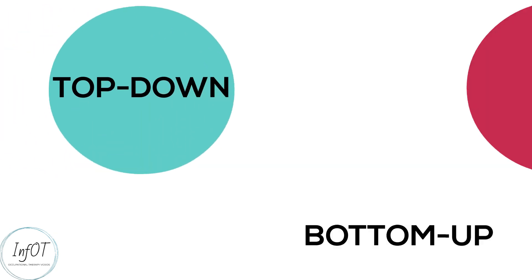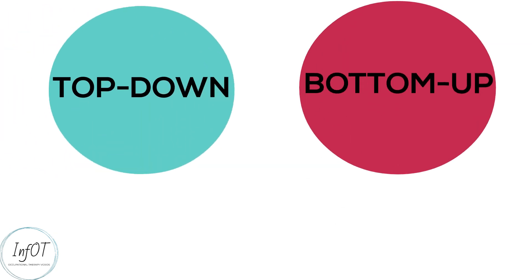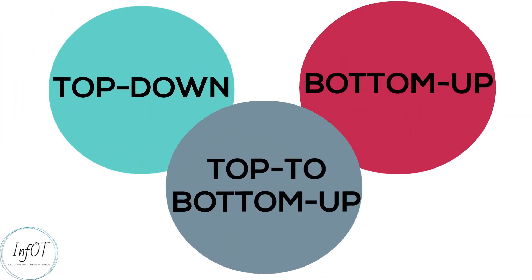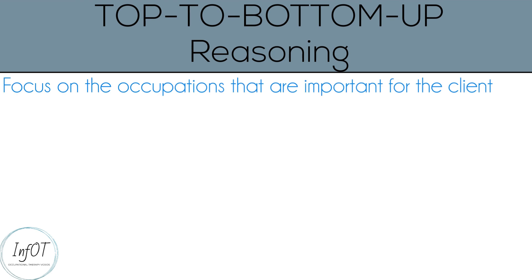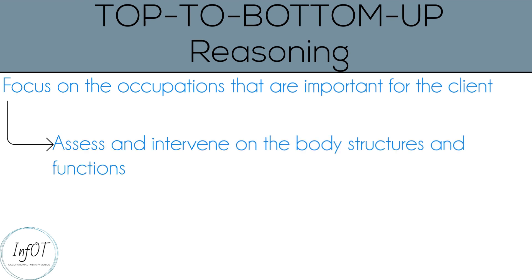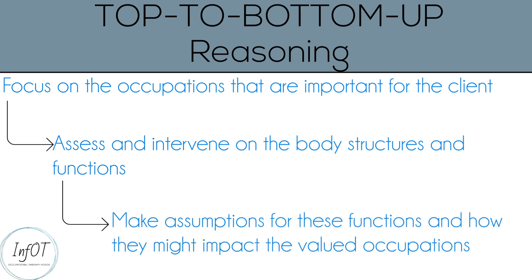We usually choose between these two, but there is one more option: the top-to-bottom-up approach. Top-to-bottom-up reasoning focuses first on the occupations, and then jumps directly to the assessment of the body functions and structures. Then, assumptions are made on how these functions may affect occupational performance. This reasoning is not occupation focused.